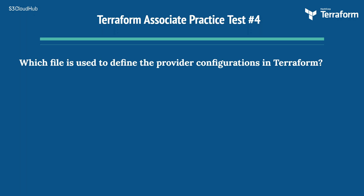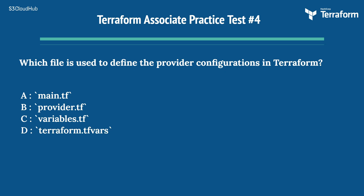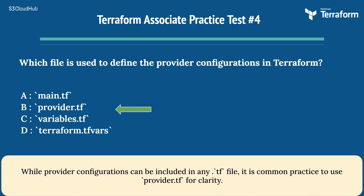Question 4: Which file is used to define the provider configurations in Terraform? Options: A) main.tf, B) provider.tf, C) variables.tf, D) terraform.tf. The right answer is B) provider.tf. While provider configurations can be included in any .tf file, it is common practice to use provider.tf for clarity.